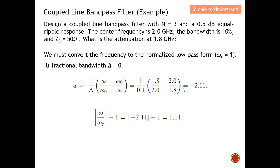Working through the transformation gives Ω = −2.11. Then we compute |Ω| − 1 = 2.11 − 1 = 1.11. Since we take the magnitude, the negative sign is dropped, giving us a positive value of 1.11. Keep this value in mind — we will use it to read the attenuation chart.